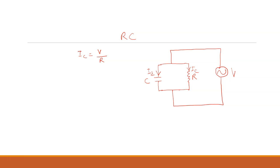The current passing through the capacitor is ID, and it is given by dQ by dT, which equals C dV by dT, because dQ equals C dV, or Q equals CV. You have learned this in your lower class — this is equation number one.